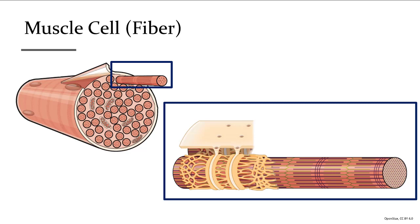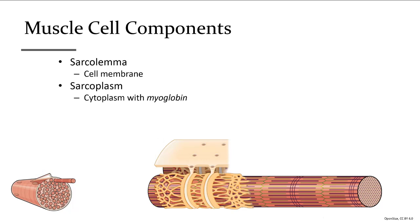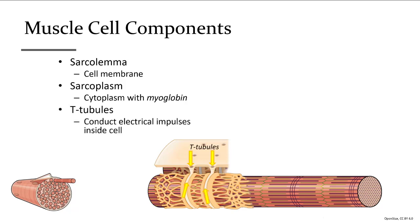The cell membrane of a muscle is called the sarcolemma. The cytosol or fluid inside is called the sarcoplasm. Myoglobin is a protein found in the sarcoplasm that helps bring more oxygen into the cell for energy production. T-tubules are electrical fibers that cause the entire muscle cell — from the outside deep to the center — to be activated all at once.